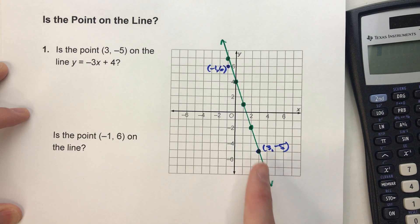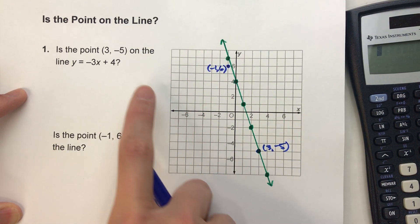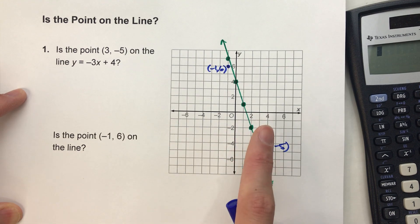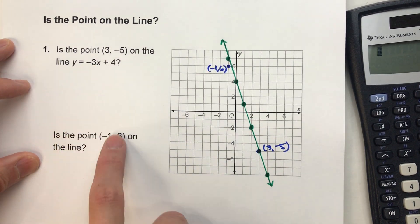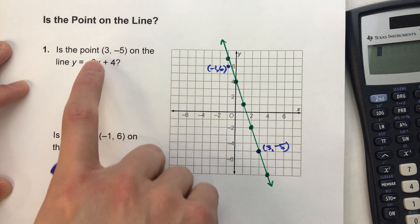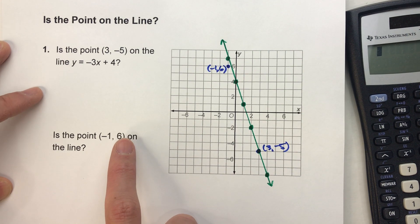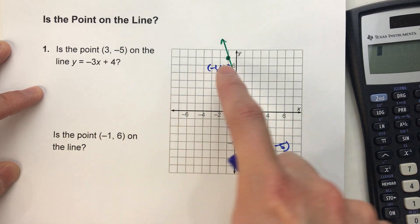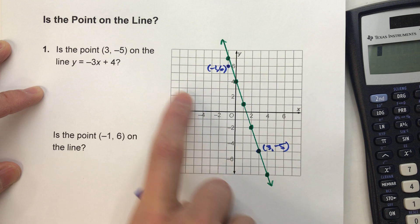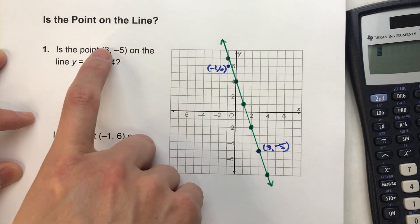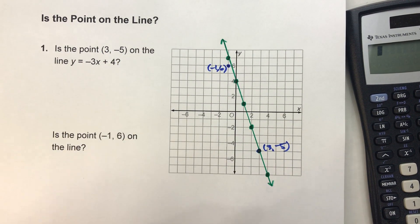However, it doesn't always make sense to make the graph. Sometimes these coordinates might be way far out. Sometimes these might have complicated numbers and fractions and decimals, and it makes more sense to use algebra to do it. So I'm going to show you how to find that exact same answer of yes it is and no it's not, just purely using algebra.